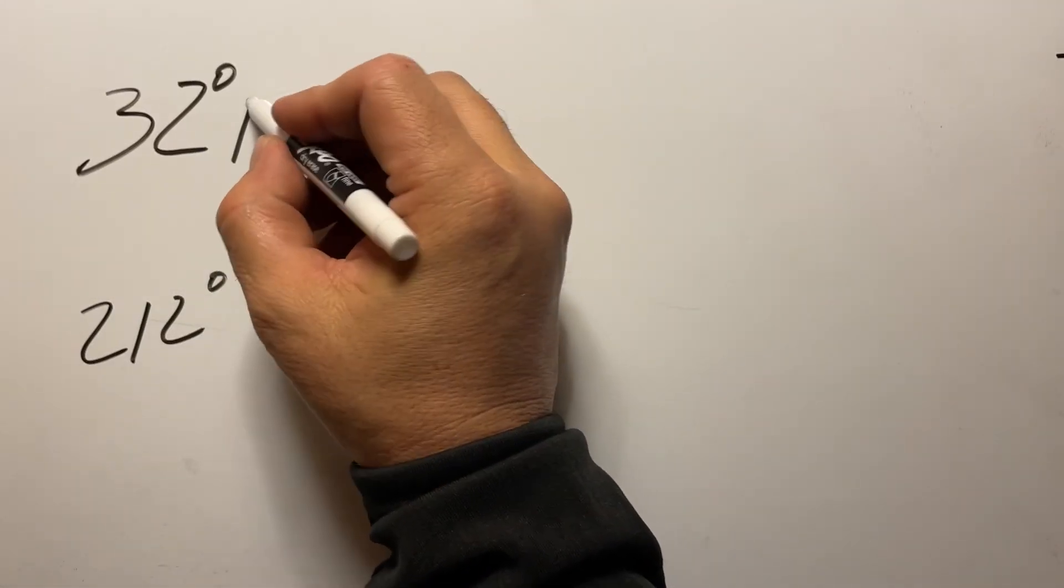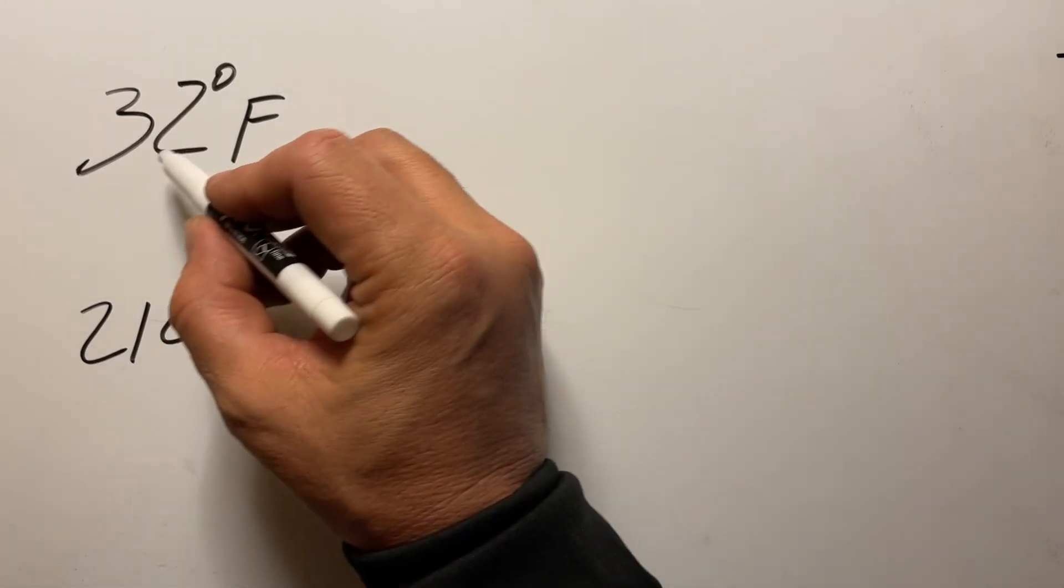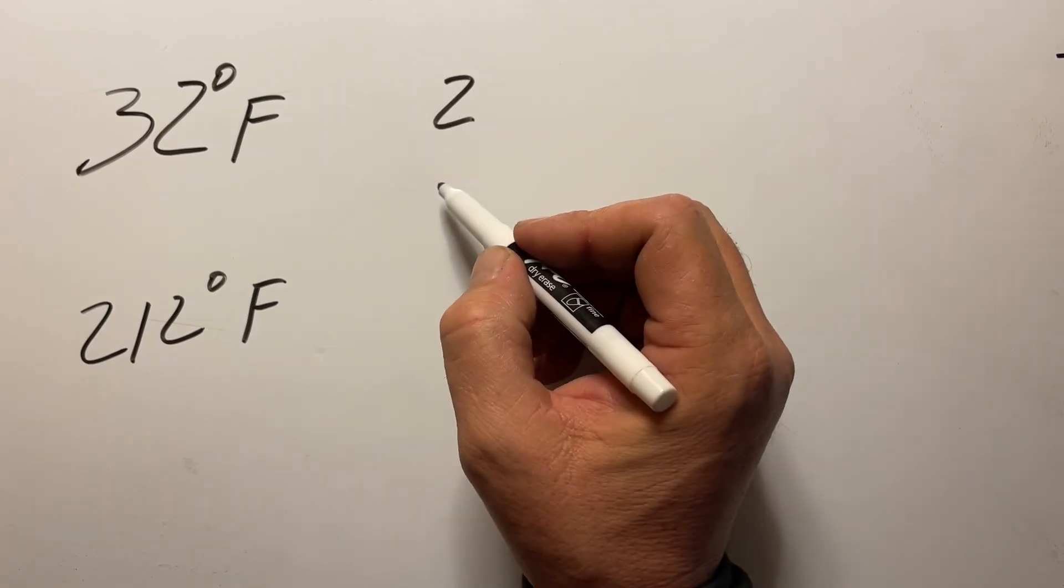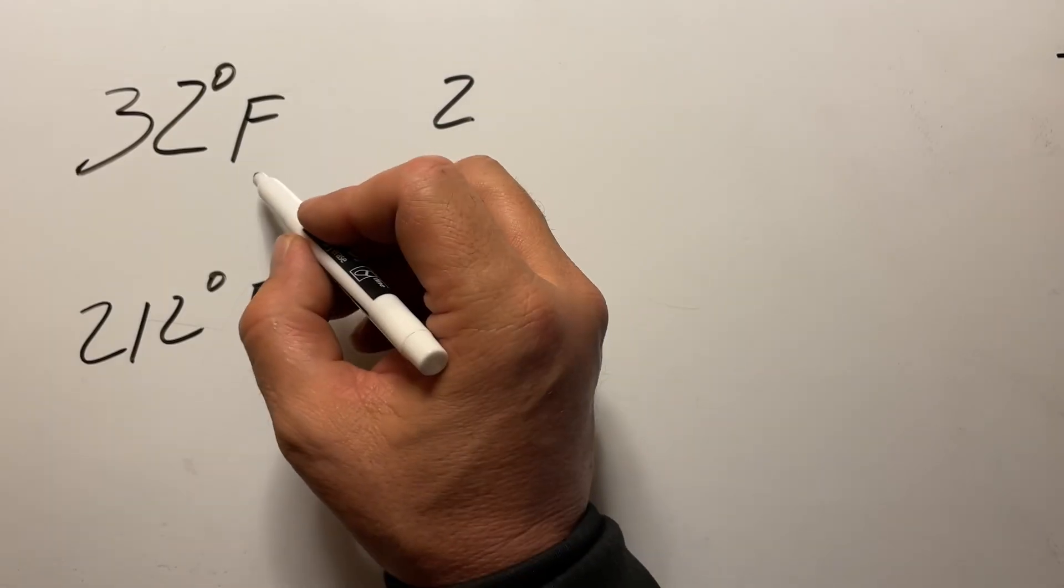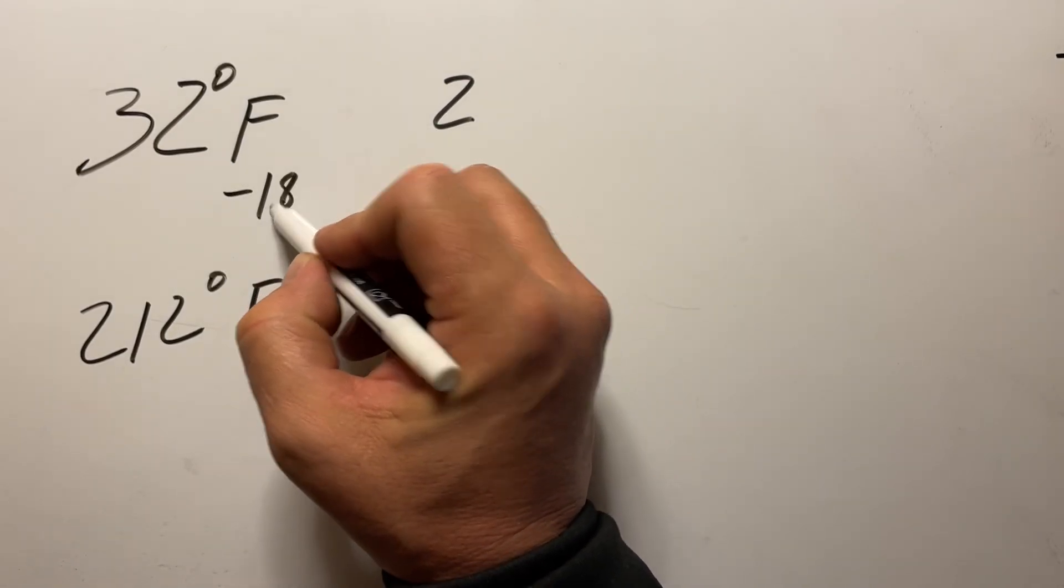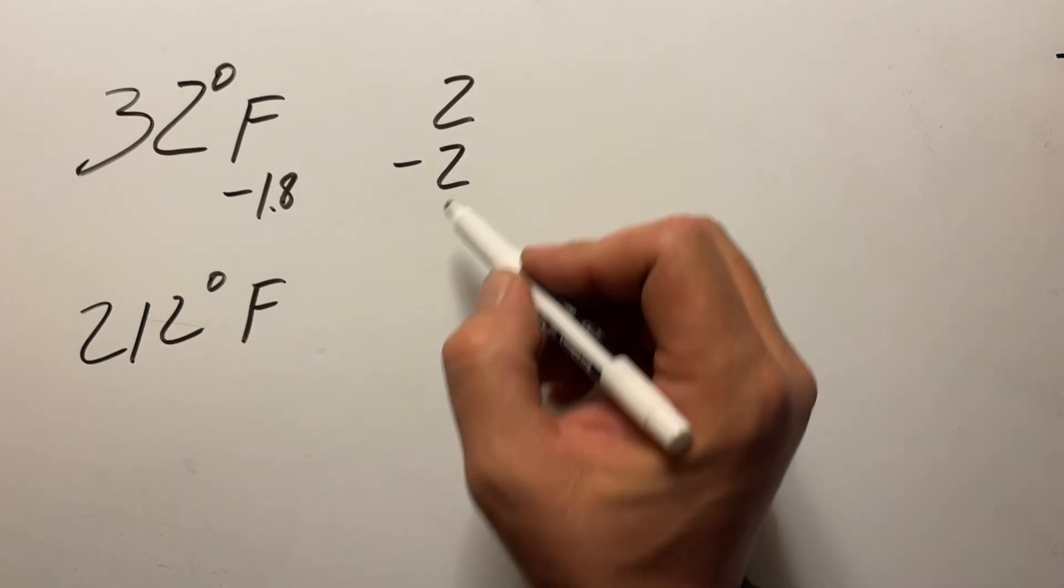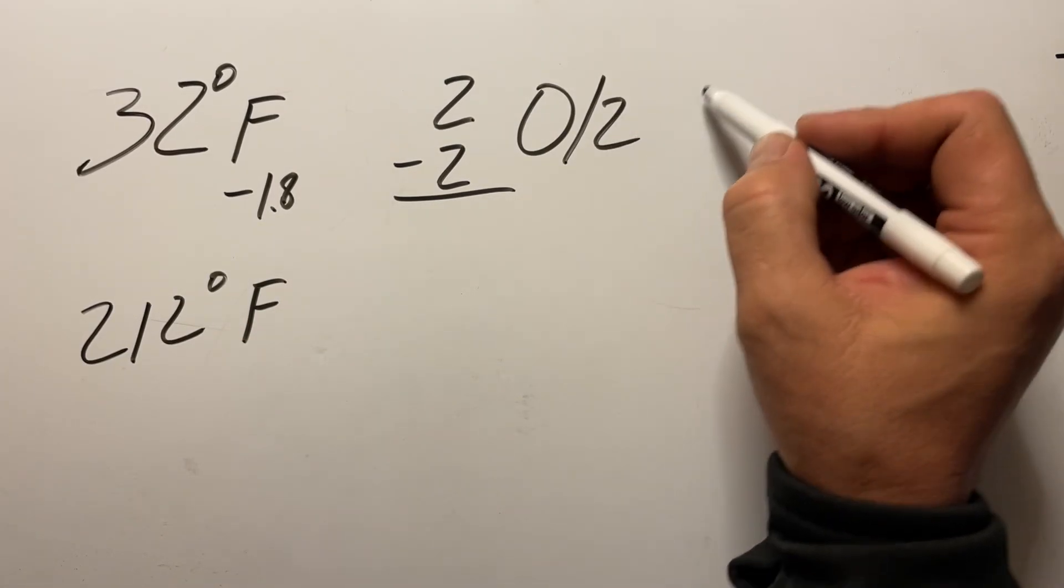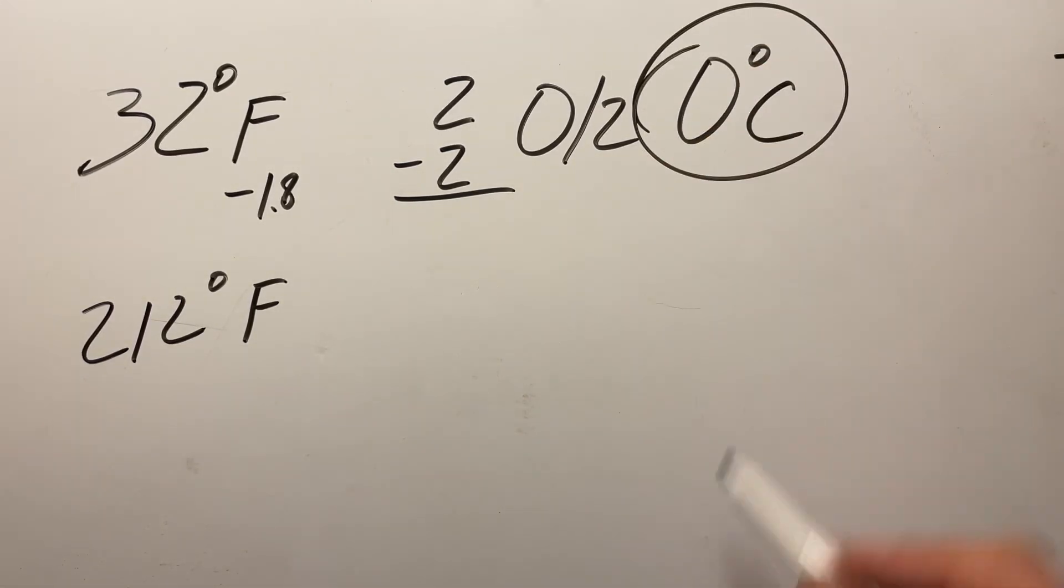Now we're going to do the freezing and the boiling point of water. So first one is 32. We subtract 30. That leaves us with 2. The difference between 32 and 50 is negative 18. So it's negative 1.8. We're going to round down to negative 2. That leaves us with 0. 0 divided by 2 is still 0, and that gives us 0 degrees Celsius, the freezing point of water.